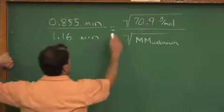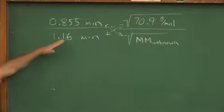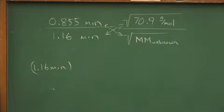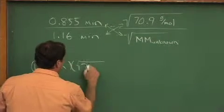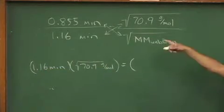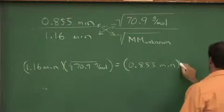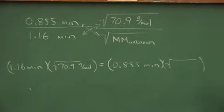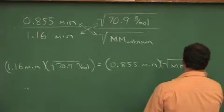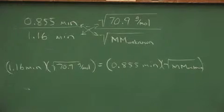Let me show all my work here. It's the first time I've done this. I'm going to cross multiply, divide, and then square this. So I'm cross multiplying my known values, 1.16 minutes times the root of 70.9. That's going to be equal to 0.855 minutes times the root of the molar mass of the unknown. So I've got this going on that diagonal. Oh, there we go, that just barely fit in there.